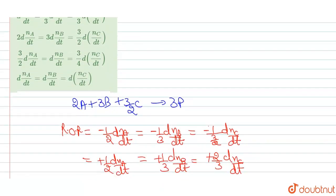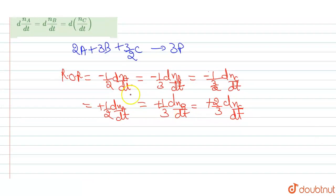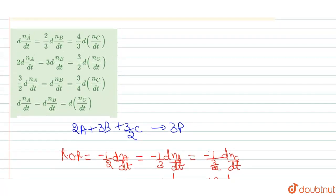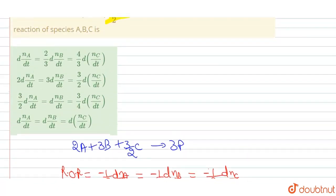Multiplying the entire expression by 2, the relation simplifies to: d[A]/dt = 2/3 × d[B]/dt = 4/3 × d[C]/dt. This is the final expression for the rate of reaction, and the correct answer is option A.